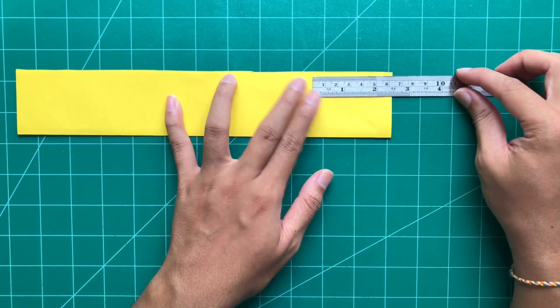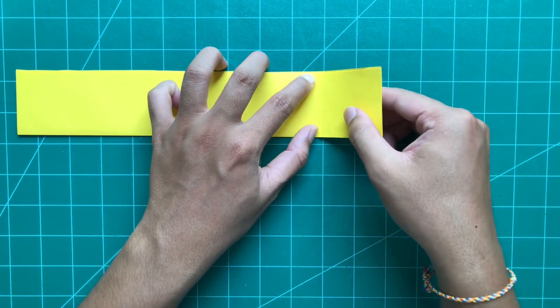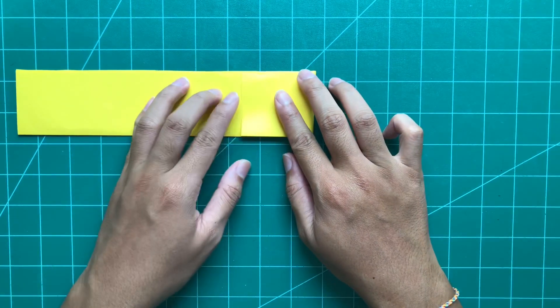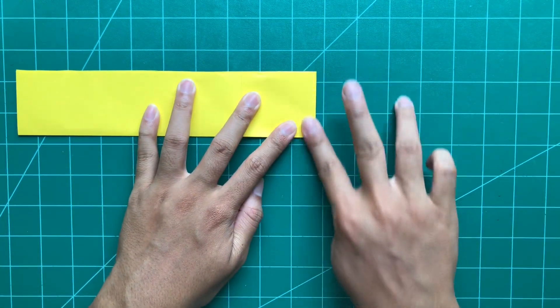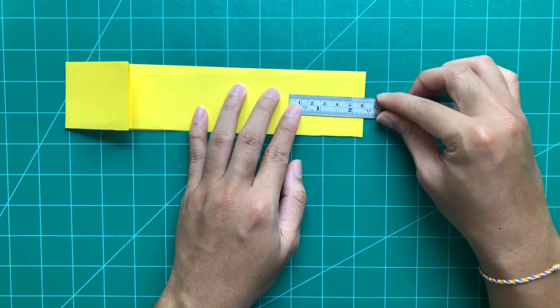From the corner, we will mark at 6cm. We will mark at 6cm. This is the 3cm.